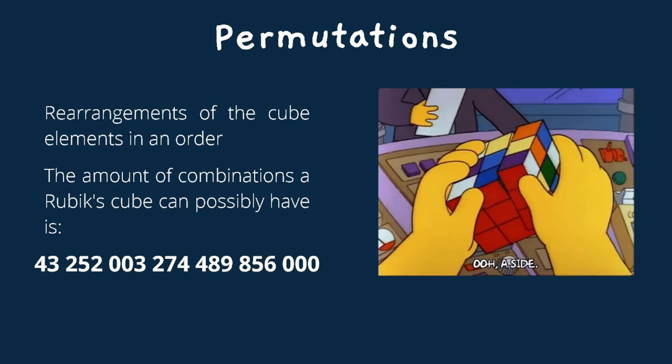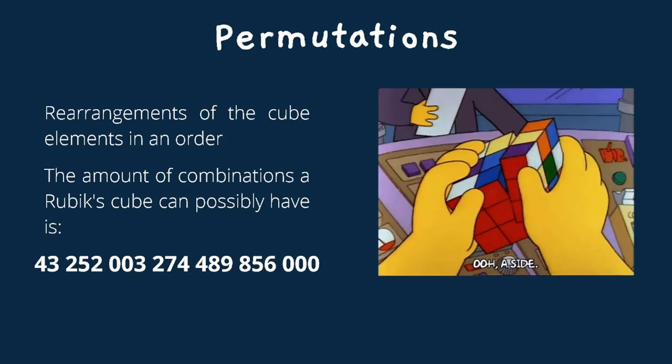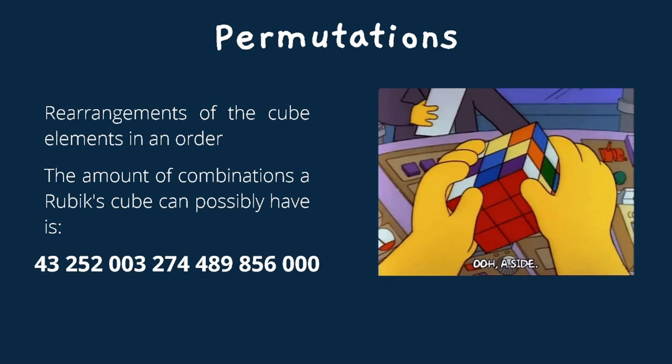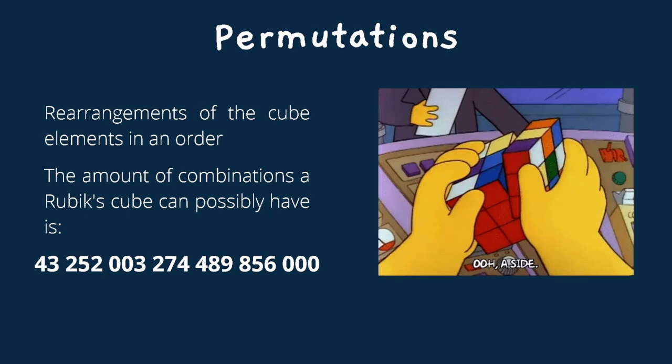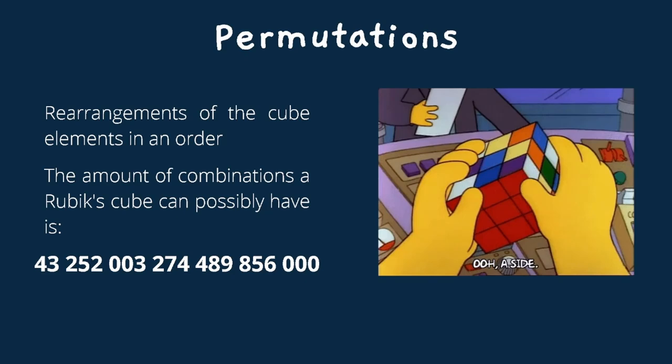When a move sequence is being done, its position changes are what you call a permutation. A permutation is the rearrangement of the cube elements in an order. For every move sequence that is done on the cube, it results to a single position or a permutation. The amount of combinations a Rubik's Cube can have is over 43 quintillion. What you are looking at on the screen is the exact amount of the total permutations a Rubik's Cube can have.